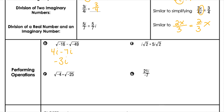For this one, we are adding like terms because they're both square roots of 2. So I'm going to add i plus 5i and get 6i, and keep the root 2.